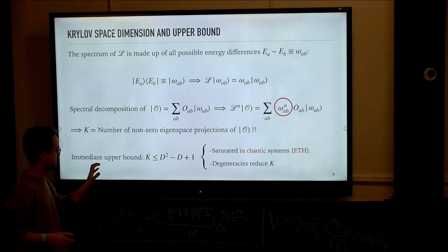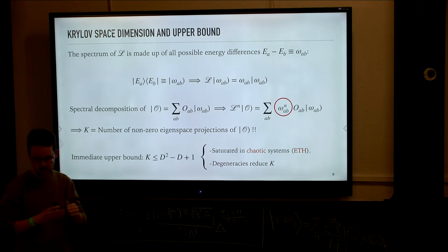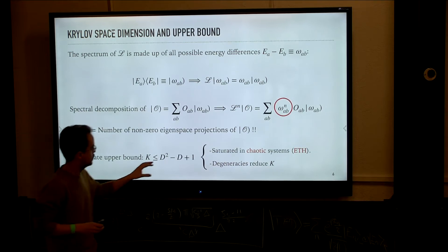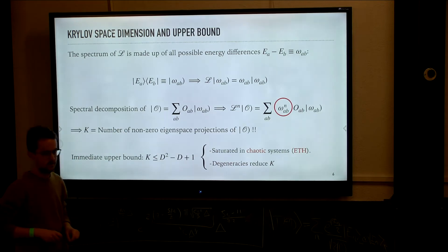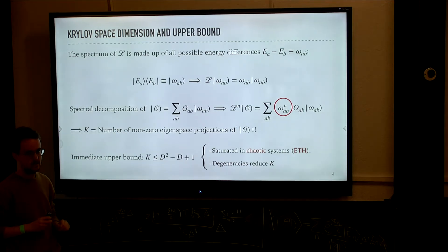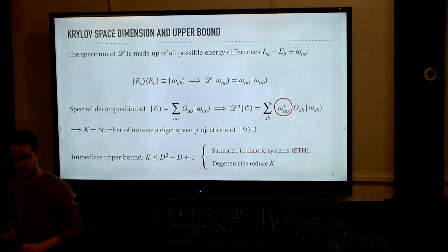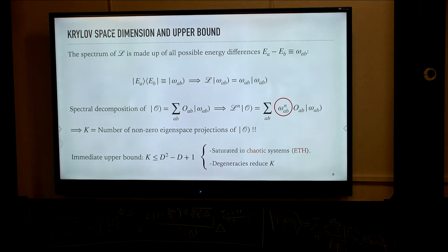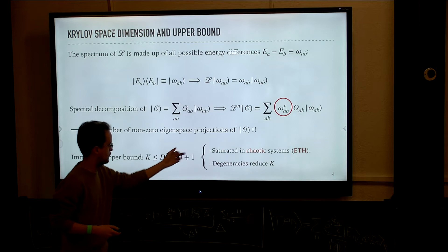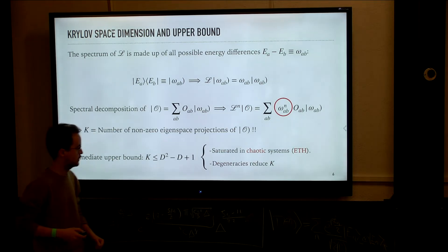The first comment is that this bound is only sensitive to the degeneracies in the spectrum of the Liouvillian and to how the operator is inserted in it. If we have an operator that is dense in the energy basis and a Liouvillian whose spectrum has no degeneracies apart from the unavoidable zero eigenspace, then the Krylov space dimension will be maximal. This is the case, for example, in maximally chaotic systems because there is level repulsion and thus no degeneracies in the energy spectrum. Operators satisfy the eigenstate thermalization hypothesis and thus typically have no zero elements in the energy basis. So in this case we expect saturation of the upper bound of Krylov complexity.